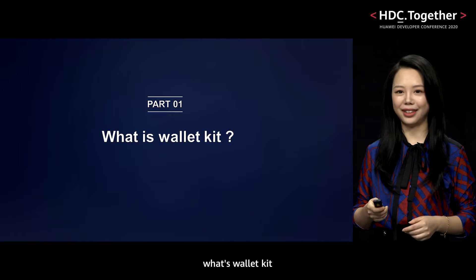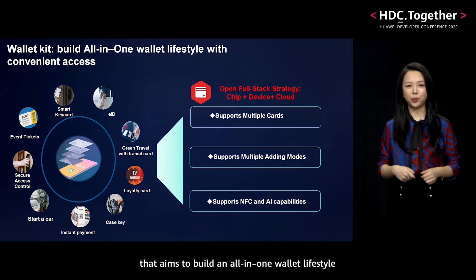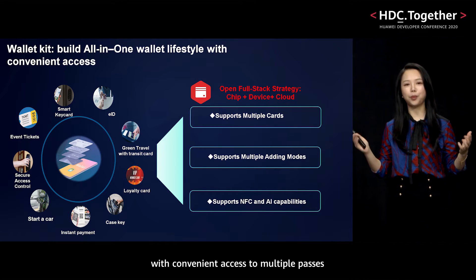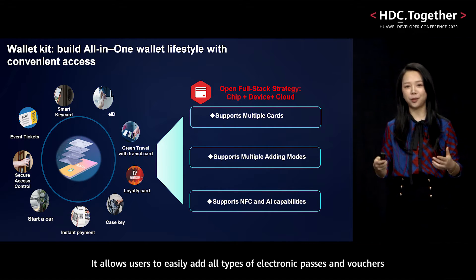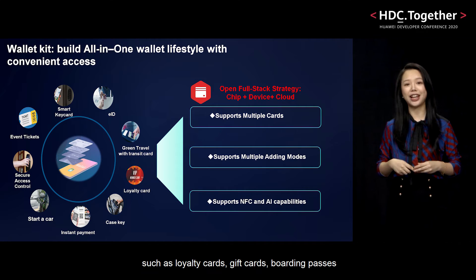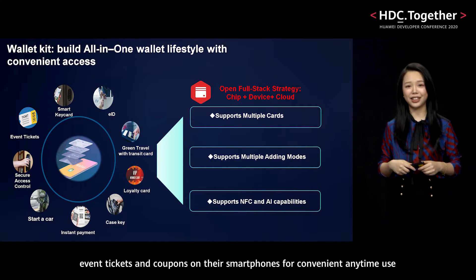What's WalletKit? Huawei WalletKit is an open capability that aims to build an all-in-one wallet lifestyle with convenient access to multiple passes. It allows users to easily add all types of electronic passes and vouchers, such as loyalty cards, gift cards, boarding passes, event tickets, and coupons on their smartphones for convenient anytime use.